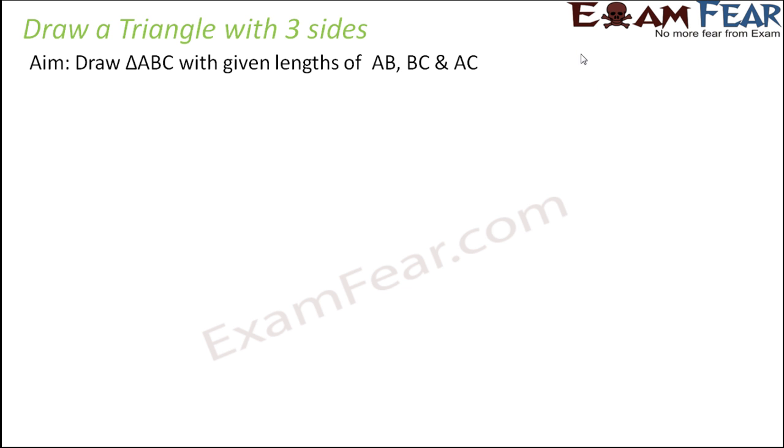If you make a rough estimate it is going to be something like this. You have a triangle ABC where you know the length of side AB, BC and AC. Let us look step by step how do we draw this triangle.